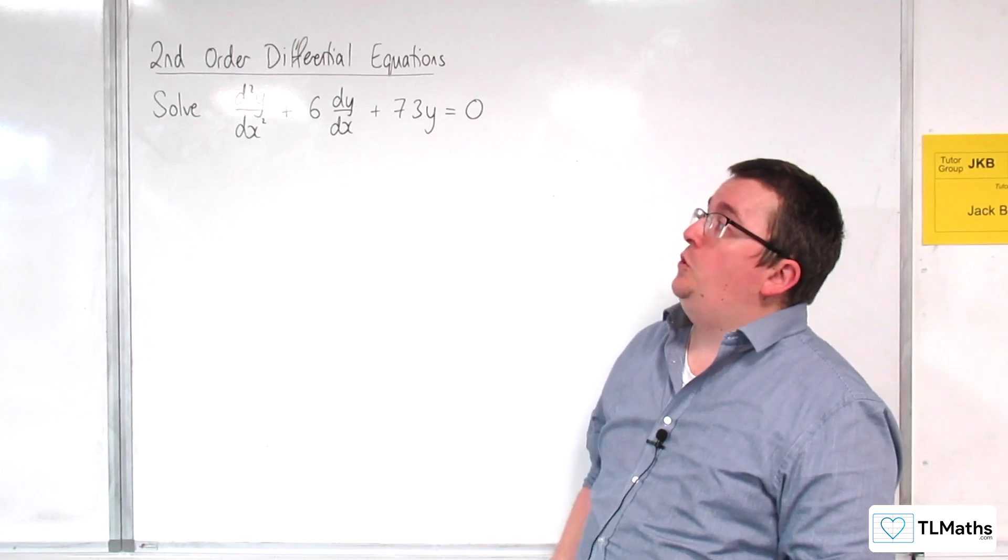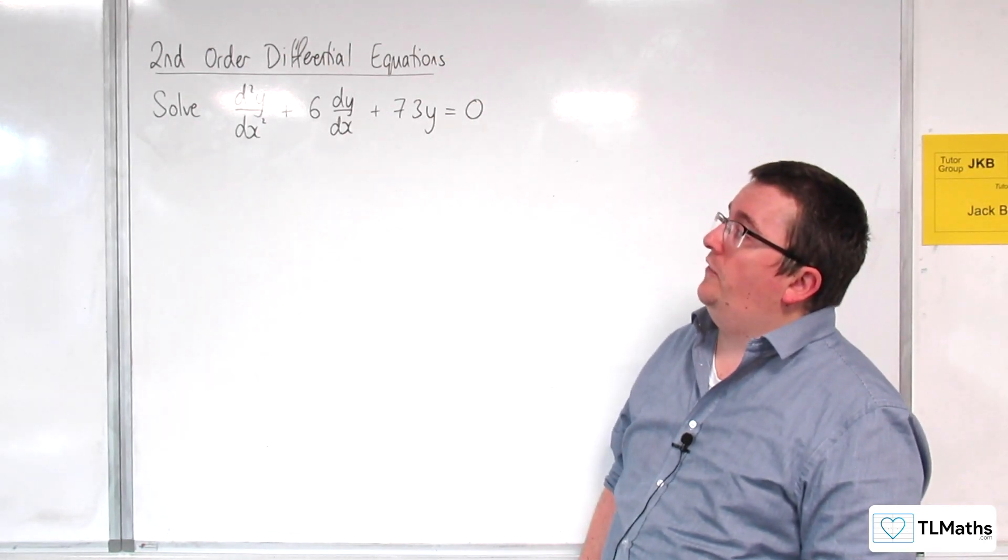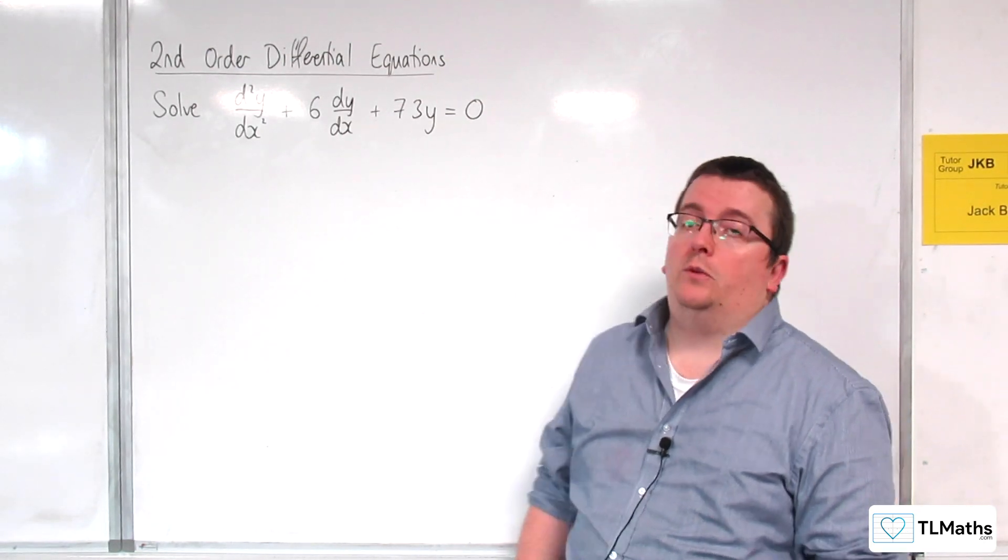In this video, we're going to solve d²y/dx² + 6dy/dx + 73y = 0.